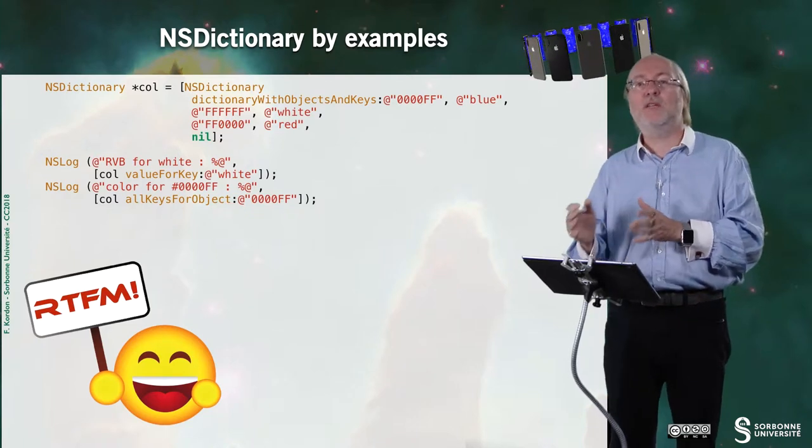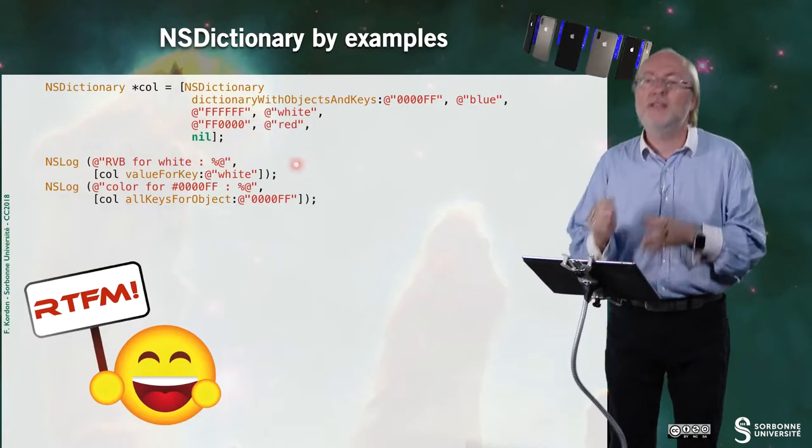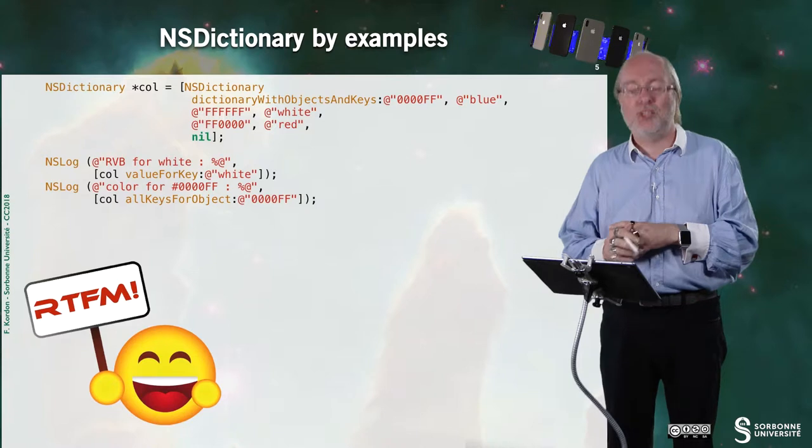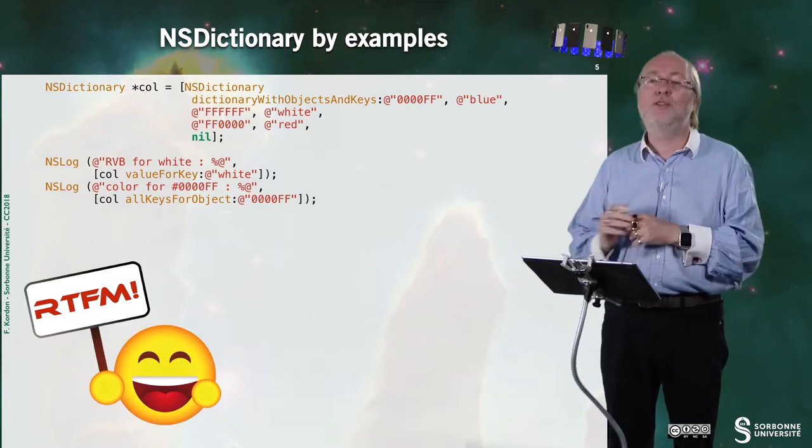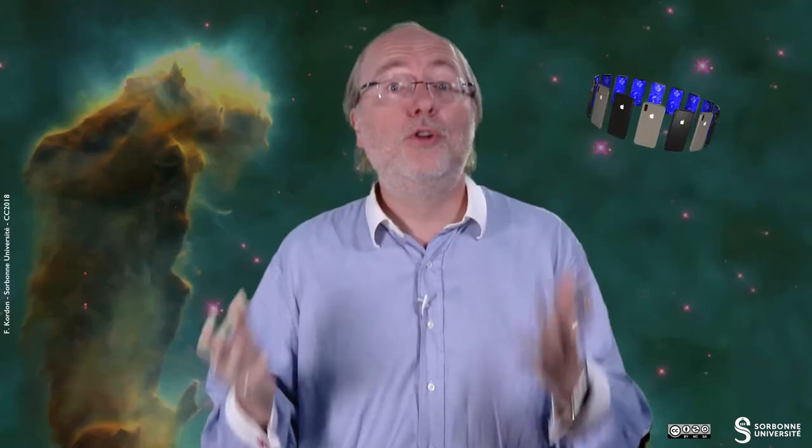And in fact, you have all keys for objects because you may have, for a given object, you may have several keys sometimes. Okay? So these are two ways to access the content of this NSDictionary. The rest, in the fantastic manual, as usual. No surprise!